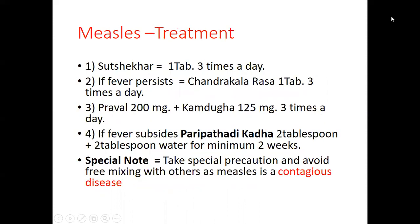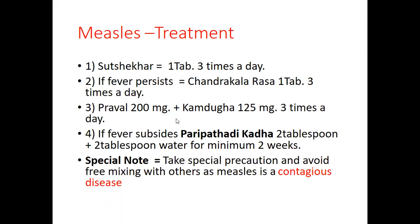For the Ayurvedic treatment: you can use Suta Shekhara — one tablet three times a day, morning, afternoon, and evening. If fever persists, use Chandrakala Rasa — one tablet three times a day. Also Pravala 200 mg plus Kamadugha 125 mg, three times a day. If fever subsides, give Paripathadhi Kadha — two teaspoons plus two teaspoons of water — for a minimum of two weeks.